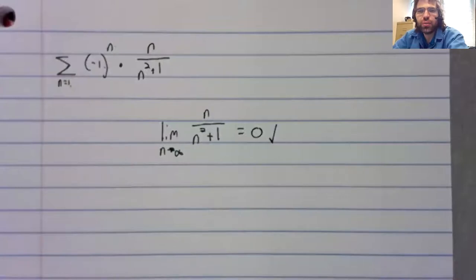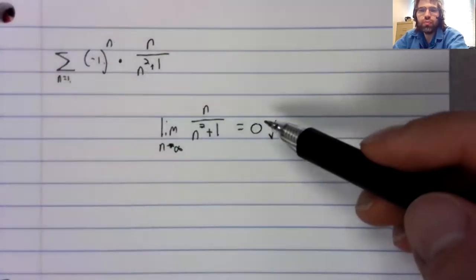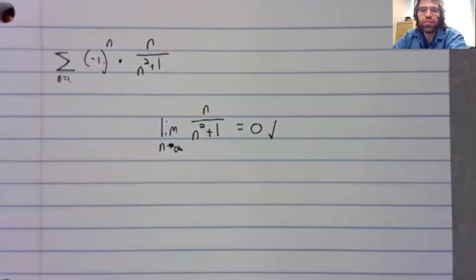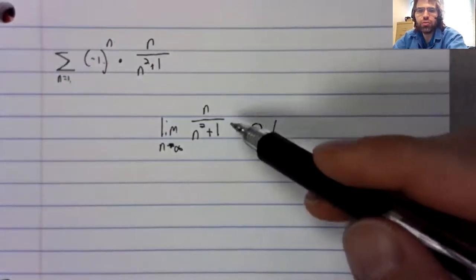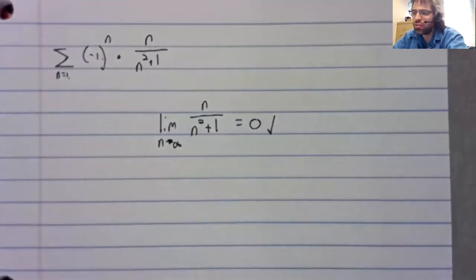This limit does equal zero. That's the first condition of the alternating series test. You can use L'Hopital's rule to see this.